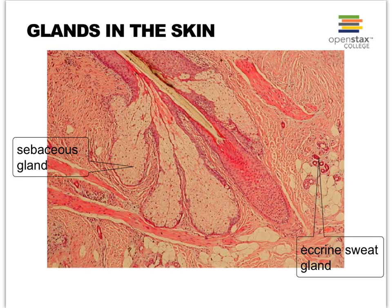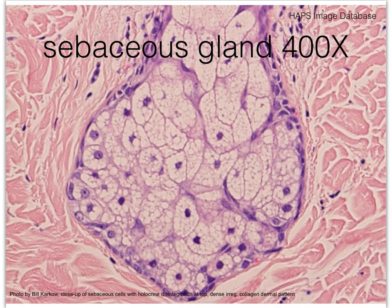Oil glands are easy to recognize on a microscope slide. Here we see our hair follicle, and these very cloud-looking structures are the oil glands. Since the cells are all filled with the oily substance we call sebum, they almost look like they're empty aside from the nuclei. Here we also see a little bit of our eccrine sweat gland. Those red structures are the erector pili that contract to make our hair stand up. Here we see a very zoomed-in view of a typical oil gland in the dense irregular connective tissue of our dermis.